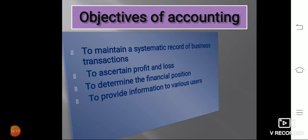Next is to provide information to various users. Another main objective of Accounting is to communicate accounting information to various interested parties like owner, investor, creditors, bank, employees, and government. The information helps them in taking sound and judicious decisions about the business.